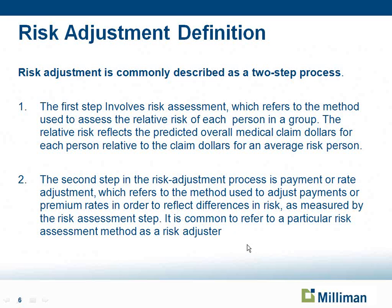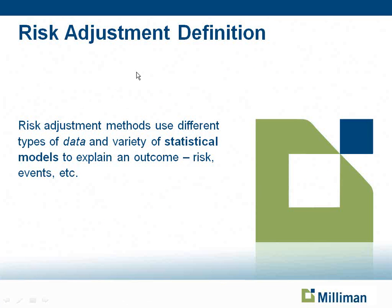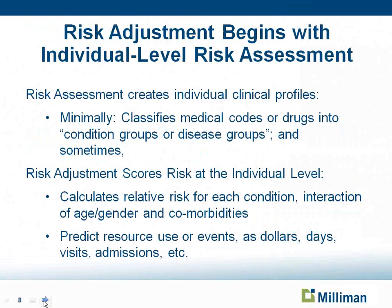These risk adjustment methods are based on a lot of data — different types of data — and use a variety of statistical models to explain an outcome. Behind the scenes, when you assign the risk score, there are sophisticated data algorithms used based on a set of what we call calibration data. We'll go into the details about how those risk scores are assigned at an individual level first, and then show you some examples.